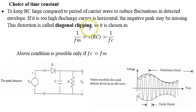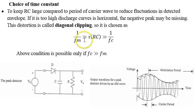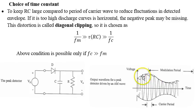If the time constant is too large, the negative peak of the modulating signal is clipped — this distortion is called diagonal clipping. The correct choice is that the time constant τ should satisfy: 1/Fc ≪ τ ≪ 1/Fm. This condition is possible only if Fc is much larger than Fm. The envelope of the waveform, visible on the output, is the detected signal.